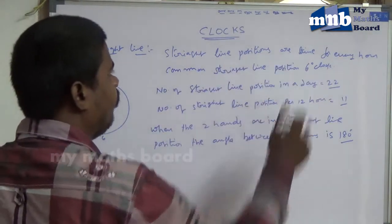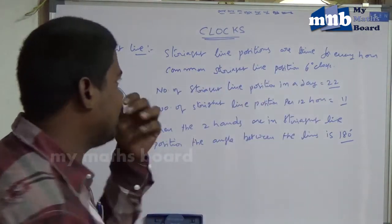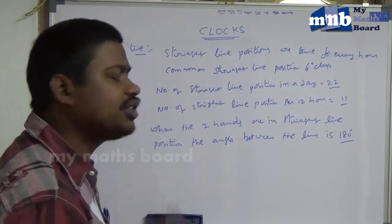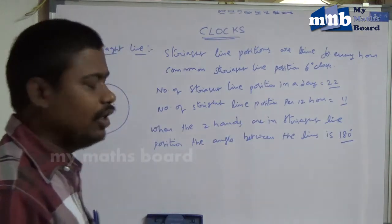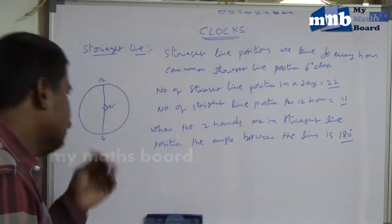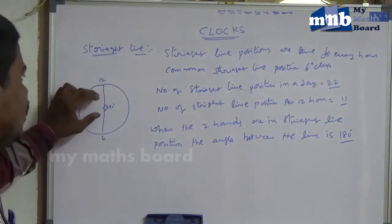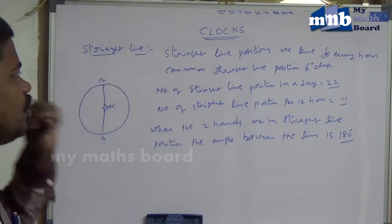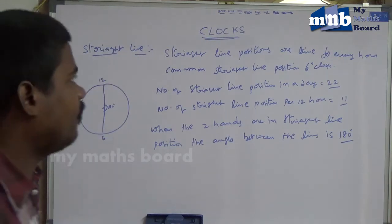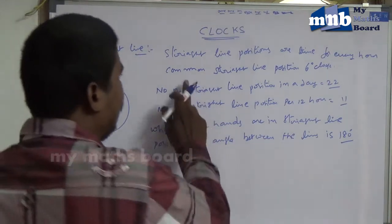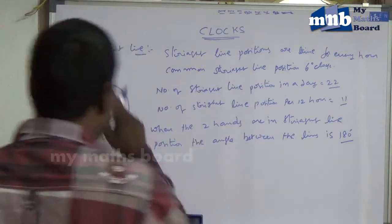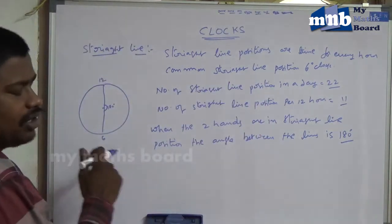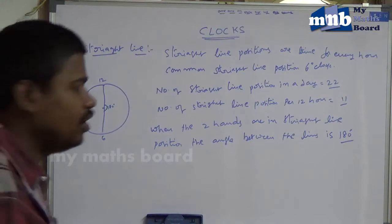Straight line positions occur one time per hour. The common straight line position is 6 o'clock. Per hour, the straight line position occurs one time, and the common straight line position is 6 o'clock, which is not counted separately.